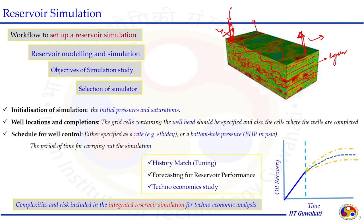We must initialize the simulation by providing initial values of pressure or saturation. Well location and completion are also required — how the injection and production wells are connected will determine the recovery process. The schedule for well control is specified either as a rate in STB per day or at a constant bottom-hole pressure (PWF). The time required to run the simulation is also specified, and we can see the production profile — cumulative production — and forecast when to abandon the well.